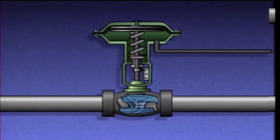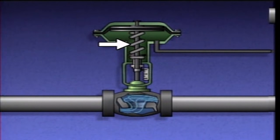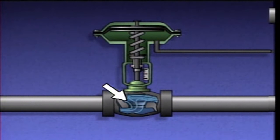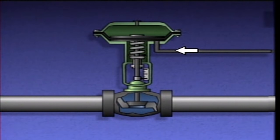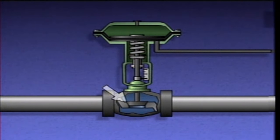This causes the diaphragm to lift, which expands the spring, raises the stem, and opens the valve. When air pressure is reduced, the spring pulls the diaphragm and the stem downward, closing the valve.